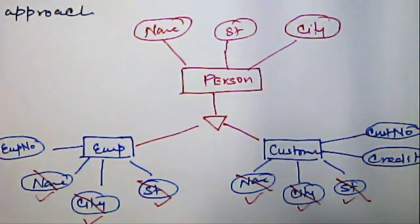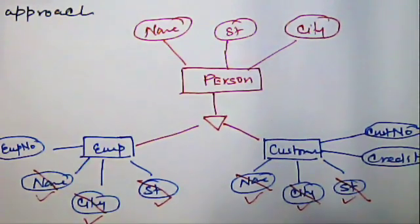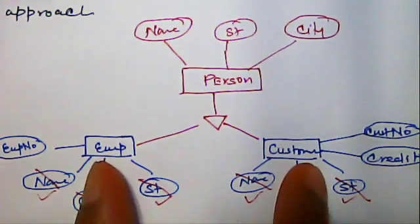But the difference is approach was bottom up. Here lower level entity unite and produces a higher level entity person.